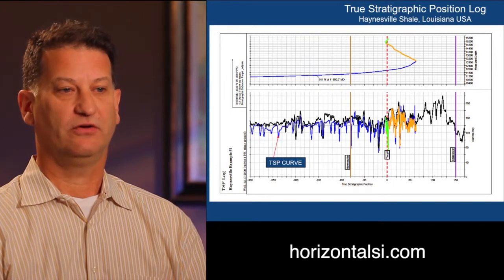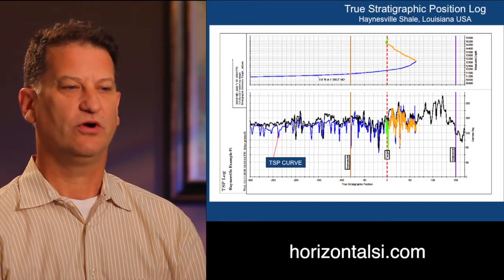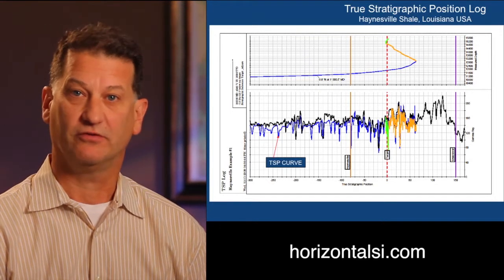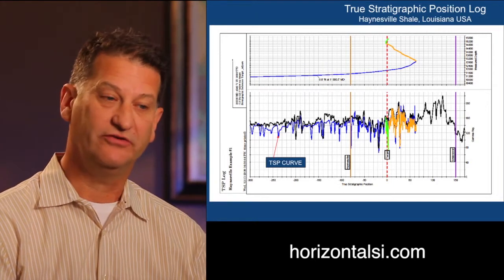The blue curve and a multicolored curve—blue, green, and orange—is the TSP curve, or that's the data that's been corrected to TSP.